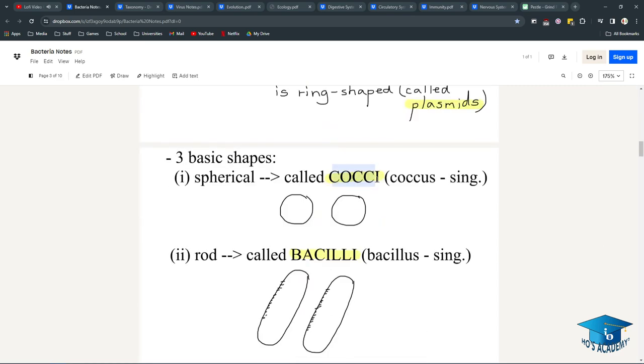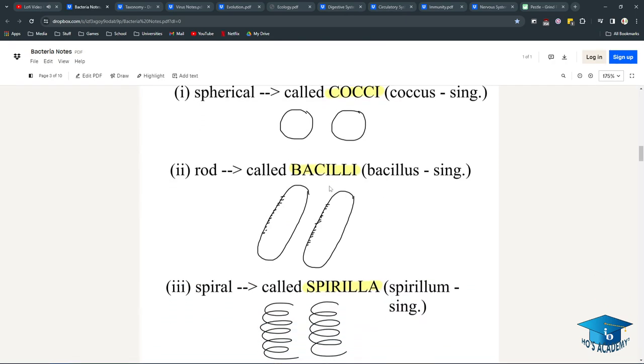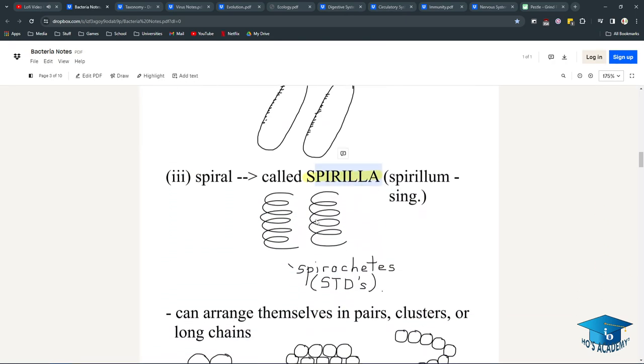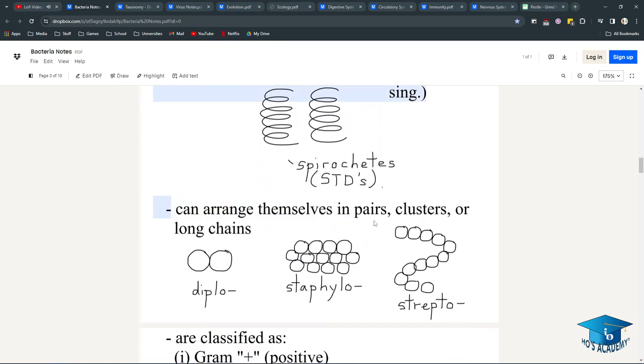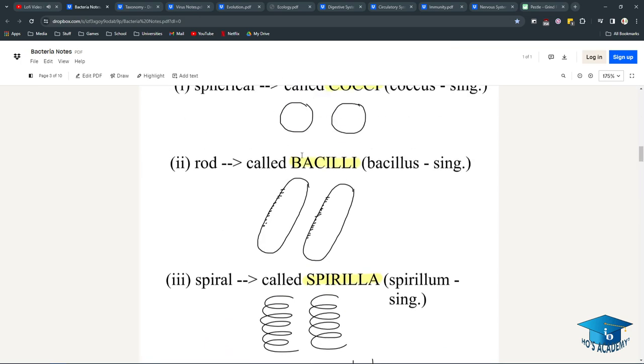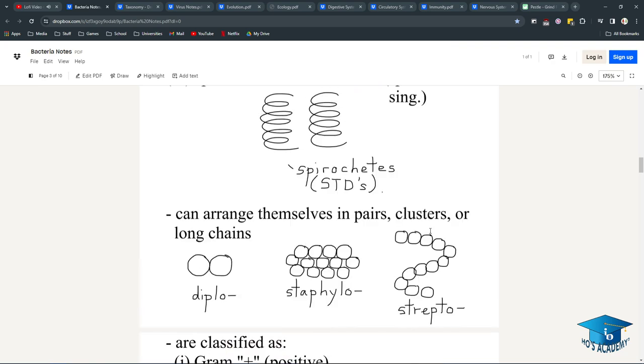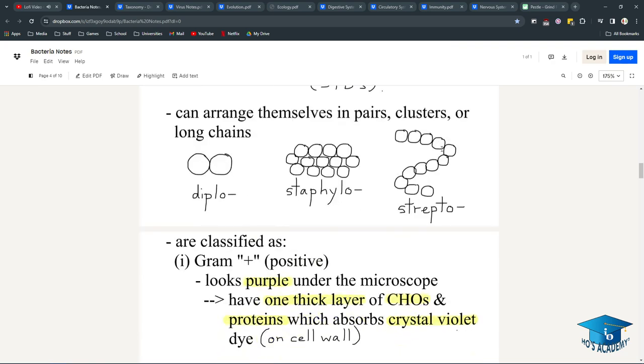Examples include Staphylococcus bacteria, bacilli, and spirilla. They can arrange themselves in pairs, clusters, or long chains, so they can be either of these three shapes and then also arrange themselves in diplo, staphylo, or strepto arrangements. Streptococcus and Staphylococcus are both real and usually reside in your throat. Strep throat comes from Streptococcus bacteria.